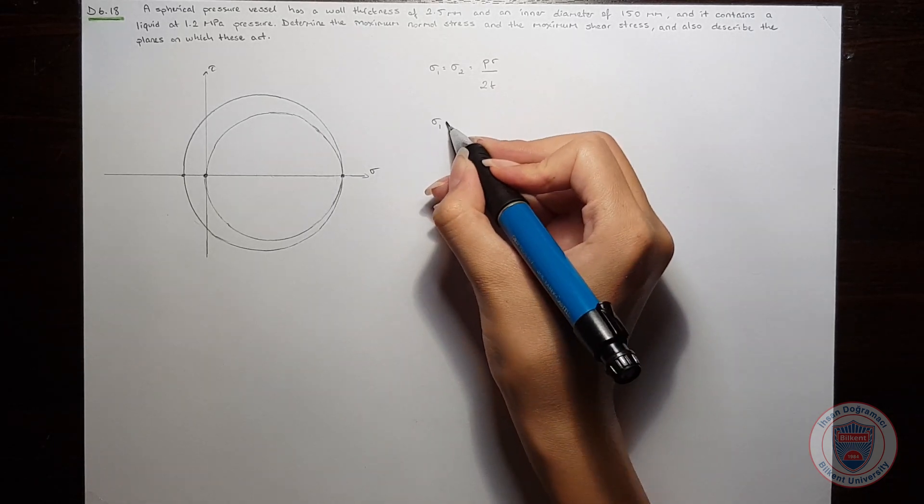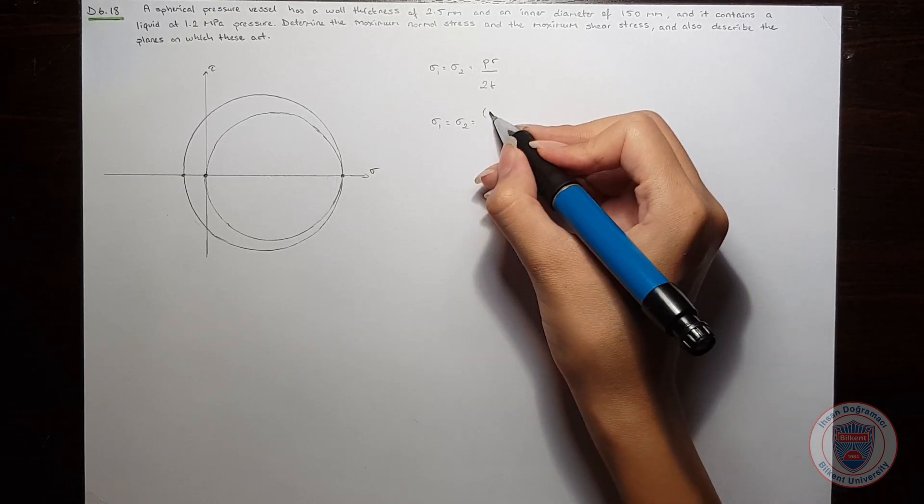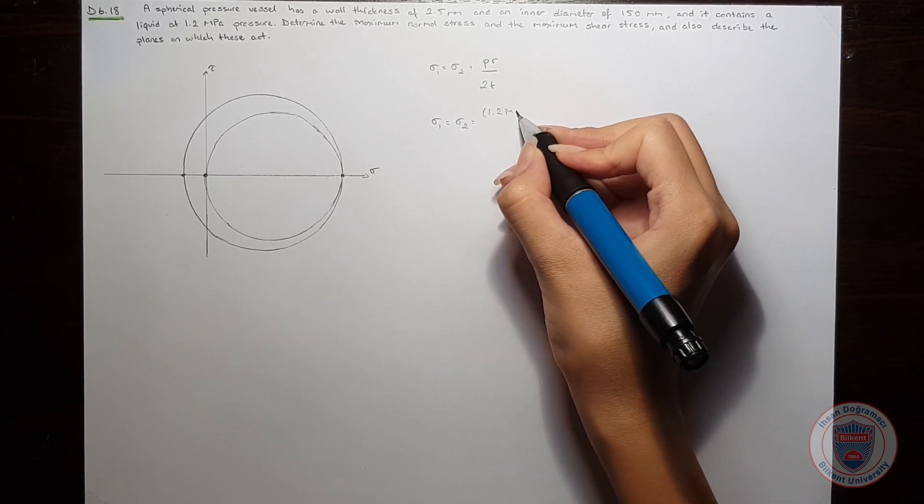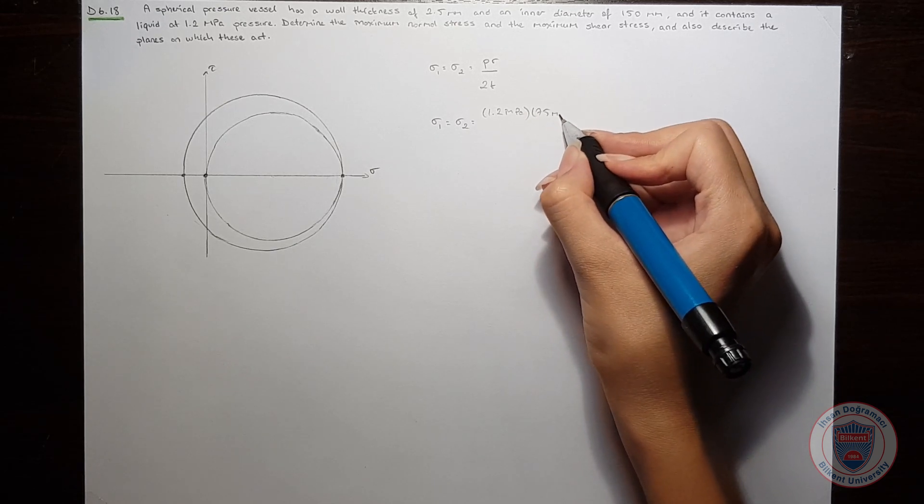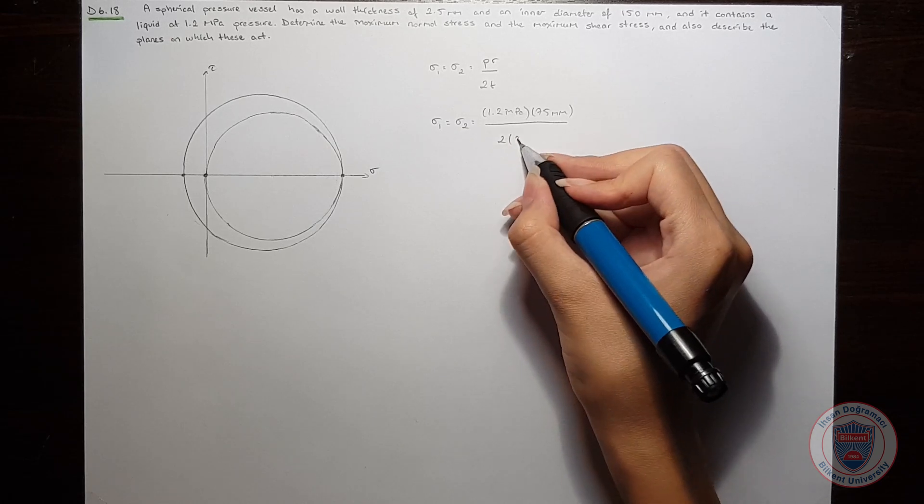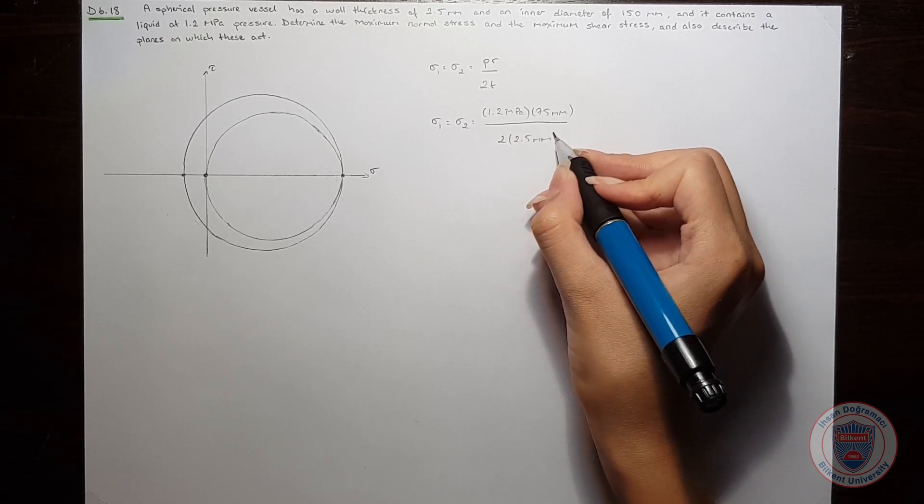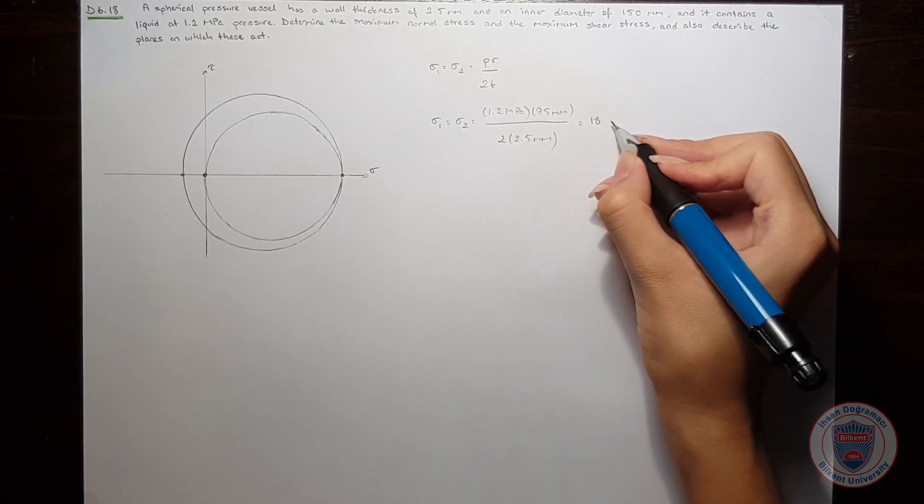So sigma1 and sigma2 will be equal to 1.2 MPa times 75 mm over 2 times 2.5 mm. They will be equal to 18 MPa.